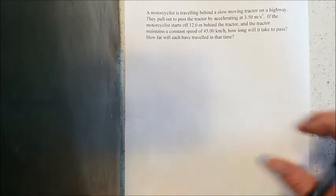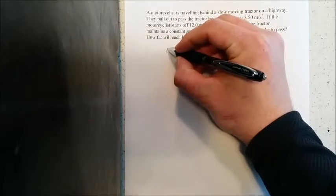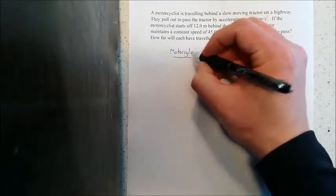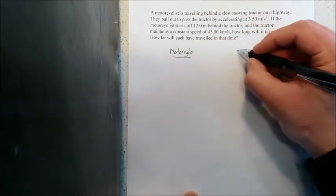Since we have this kind of problem where there's two objects we should establish two columns or two sets of information to begin. So I'm going to put on one side a motorcycle and on the other tractor.